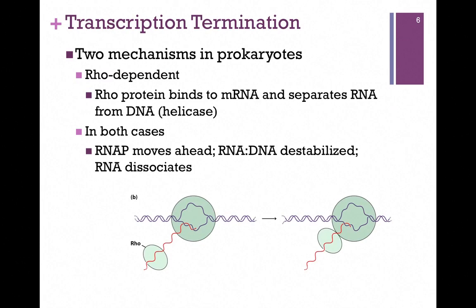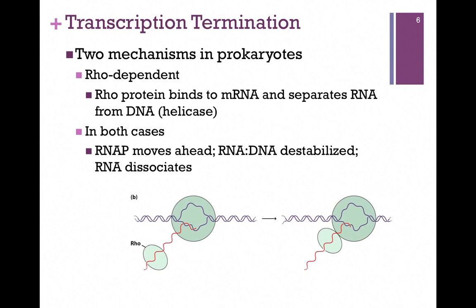The other type of termination in prokaryotes is rho-dependent — it depends on an external factor, rho-protein. It binds, as illustrated in the figure at the bottom of the screen, to the messenger RNA and moves along faster than RNA polymerase. It eventually catches up to RNA polymerase and has helicase activity, so it separates the RNA from the DNA, and that dissociates the complex. So in both cases, the double helix is destabilized — either by the stem-loop structure or by the helicase activity of rho-protein — and the RNA dissociates.